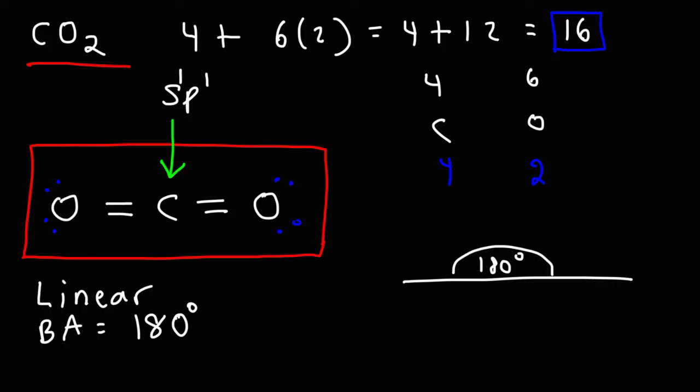That's basically it for this video. Now you know how to draw the Lewis structure of the carbon dioxide molecule, CO2. You know its molecular shape is linear, the bond angle is 180 degrees, and the hybridization of the central carbon atom is SP. Thanks for watching.